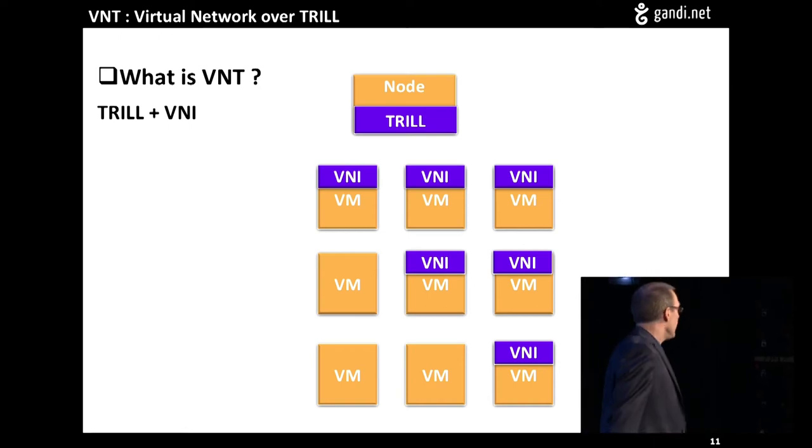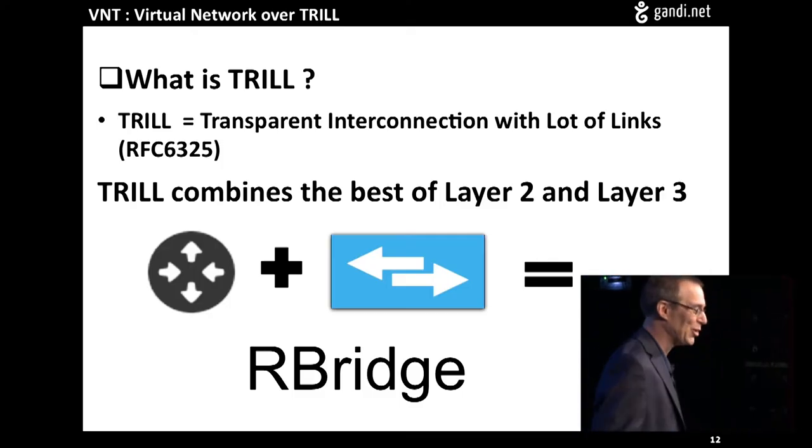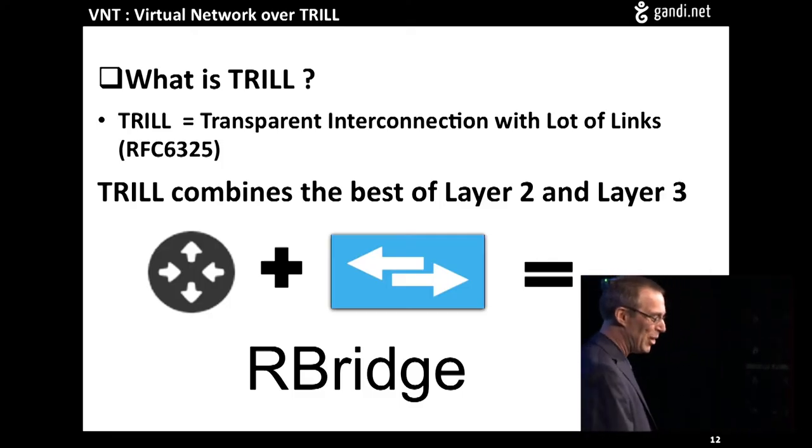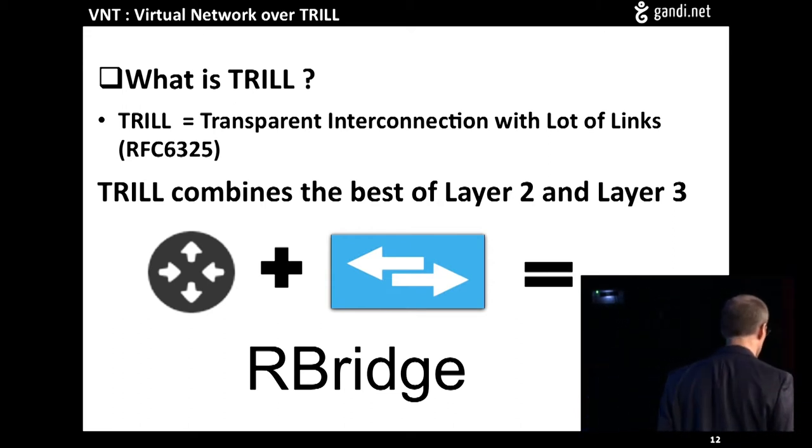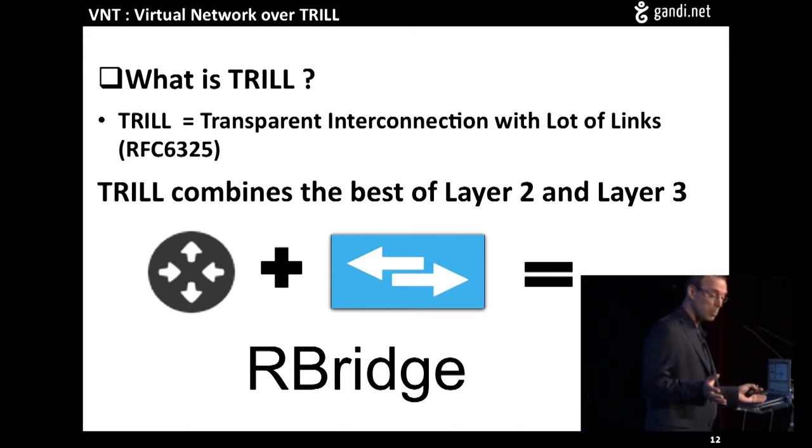You might be asking, what is TRILL? It stands for Transparent Interconnection with Lots of Links. And we had another bloody acronym, but it is an RFC, actually. It's been out there for a while. It's a layer 2 routing protocol, and it combines layer 2 and layer 3 features into a new type of network device called an RBridge. And actually you can buy RBridges from Cisco and others. So there may be people out there using TRILL right now. No? Okay, didn't think so.